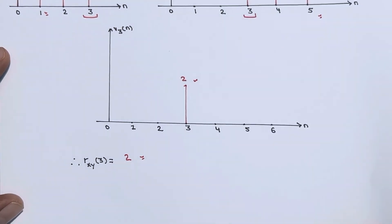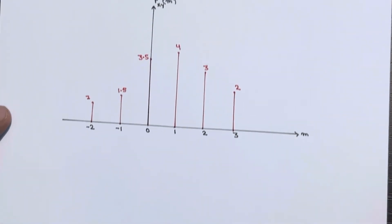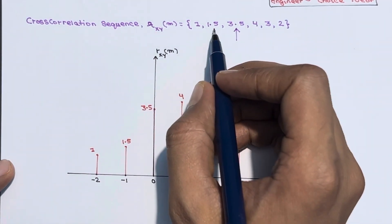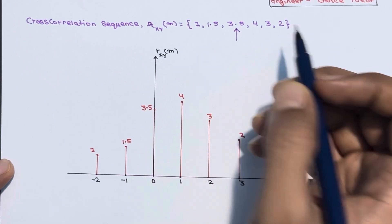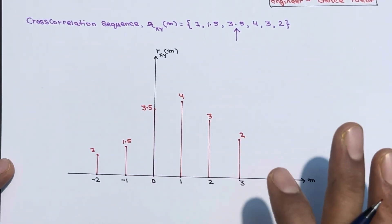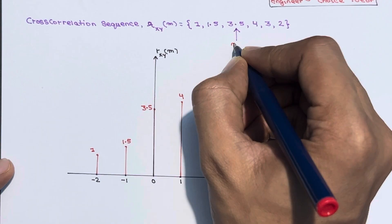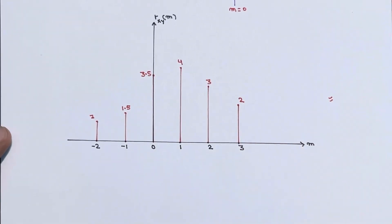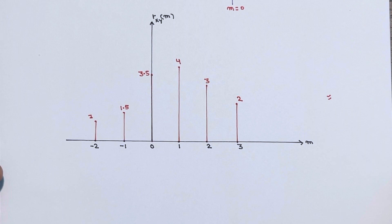Finally, the cross correlation sequence rxy[m] = {1, 1.5, 3.5, 4, 3, 2}, where m = 0 corresponds to the value 3.5. In an exam, it is better to also plot this sequence. This is the proper approach when a question asks you to perform cross correlation using the graphical method. If you have any doubts, you can ask in the comment section. Thanks for watching.